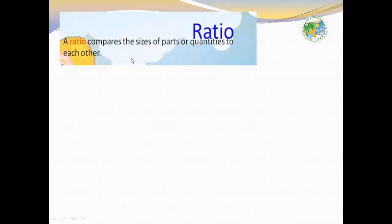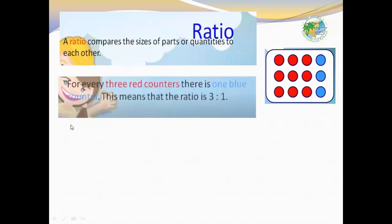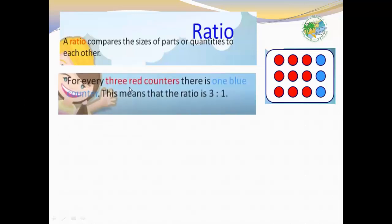The ratio compares the sizes of parts or quantities to each other. Look at these counters. There are 9 red counters and 3 blue counters. For every three red counters, there is one blue counter. This means the ratio is three to one.